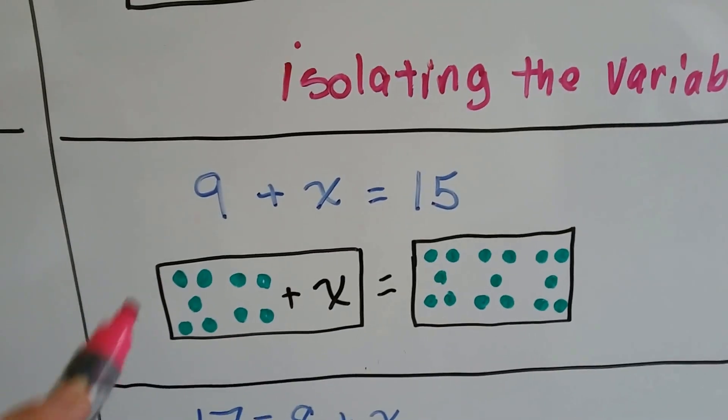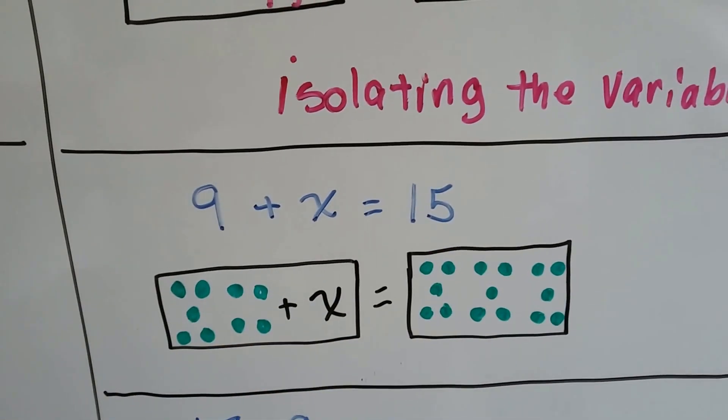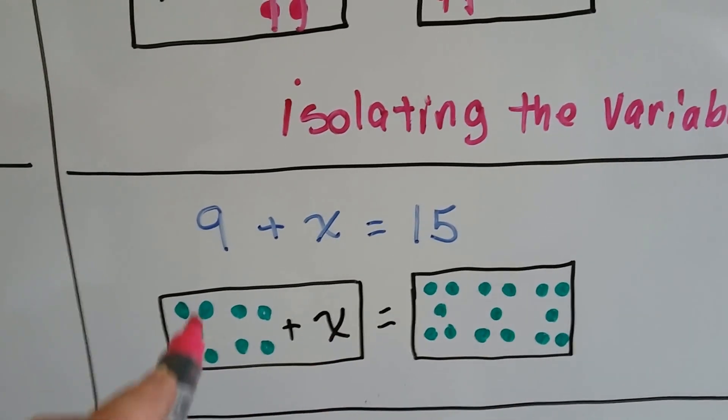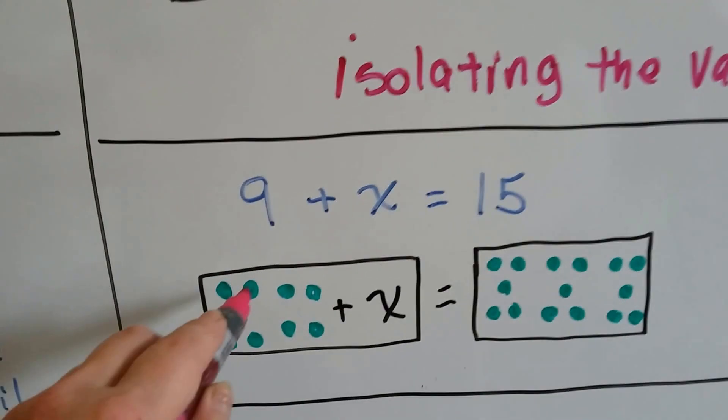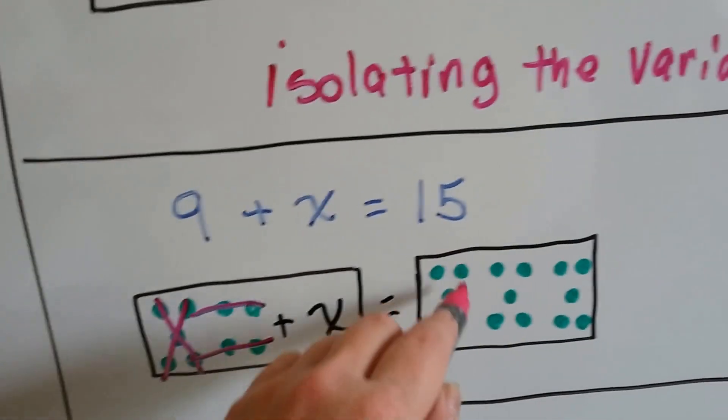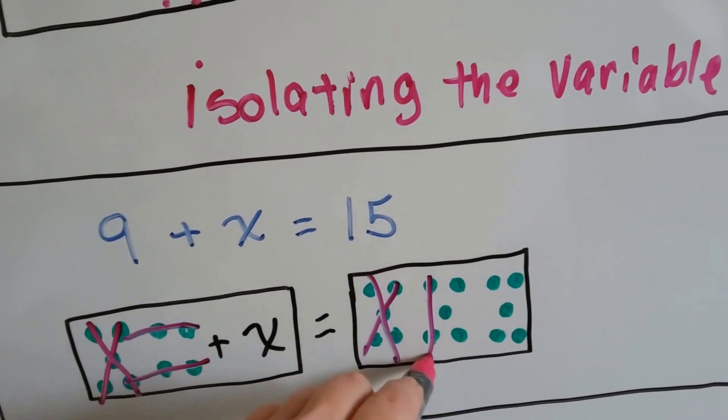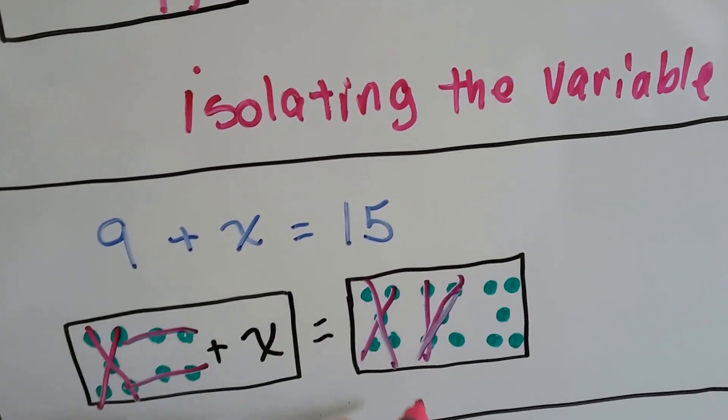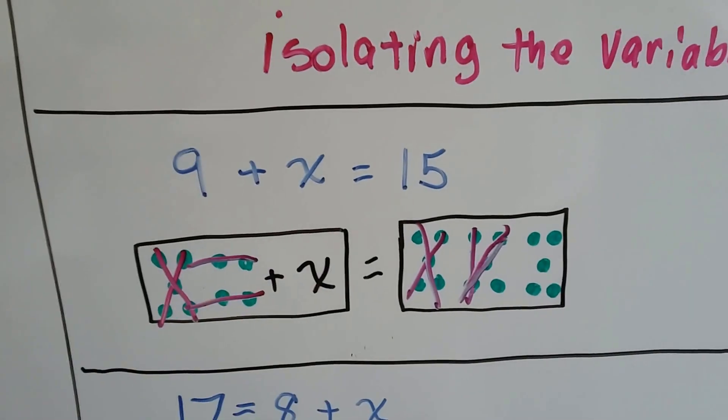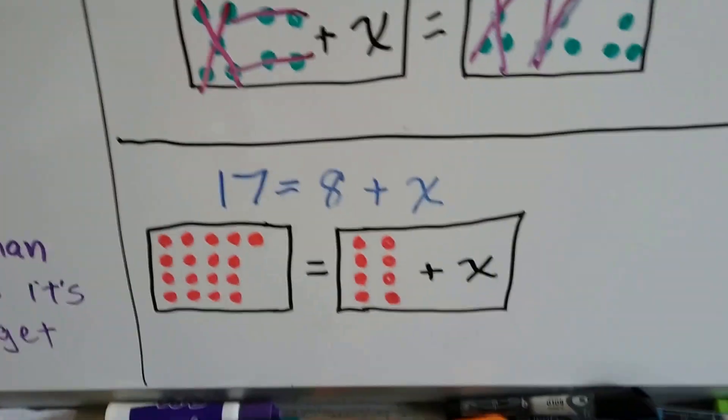Let's try it again. 9 plus x equals 15. We've got our 9 and our x here and we've got our 15. We need to get rid of this 9 so that the x is by itself. So let's take 9 away. That's 5, 6, 7, 8, 9. 5, 6, 7, 8, 9. What did that leave? 5, 6. So we know x equals 6.